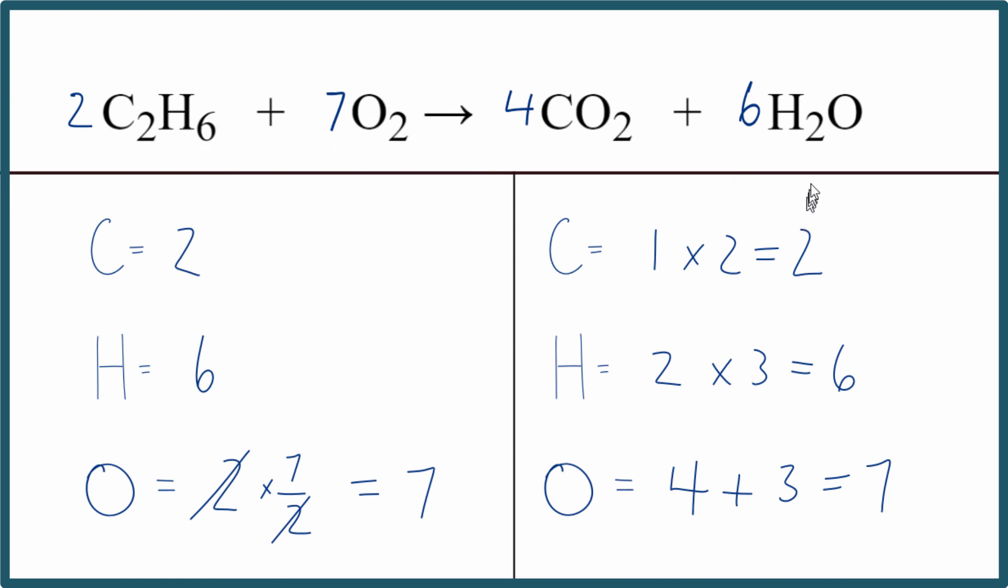So a few things to remember. One, make sure you count all of the oxygen atoms. Two, leave oxygens till last when you're balancing. And finally, if you have an odd number like we did at the end, you can use a fraction to get a whole number.